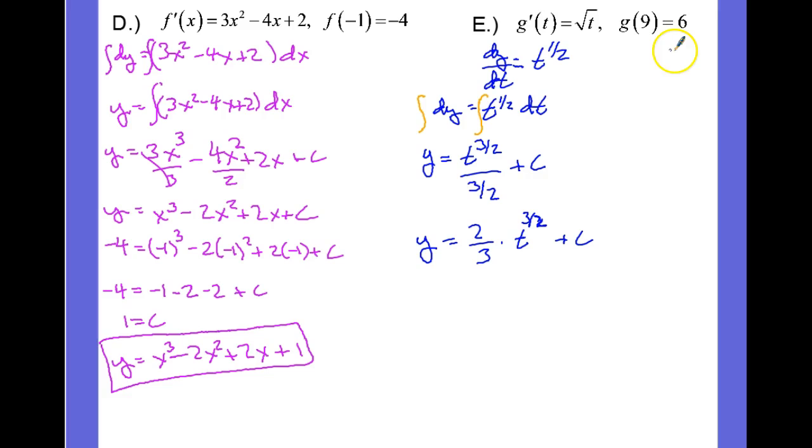Now let's apply our initial condition. When t was equal to 9, g was equal to 6, so that means y is going to be 6, so 6 is equal to 2 thirds times 9 to the 3 halves plus C. Let's deal with this exponent first. So the square root of 9 is 3, 3 cubed is 27, 27 divided by 3 is 9, 9 times 2 is 18. And if I subtract 18 from both sides, we get negative 12 equals C.